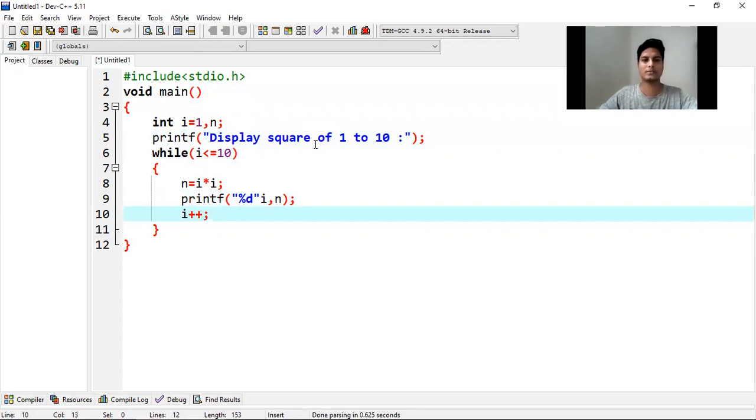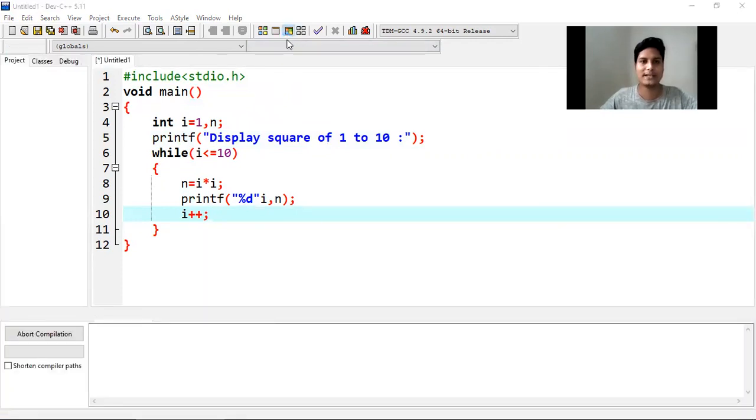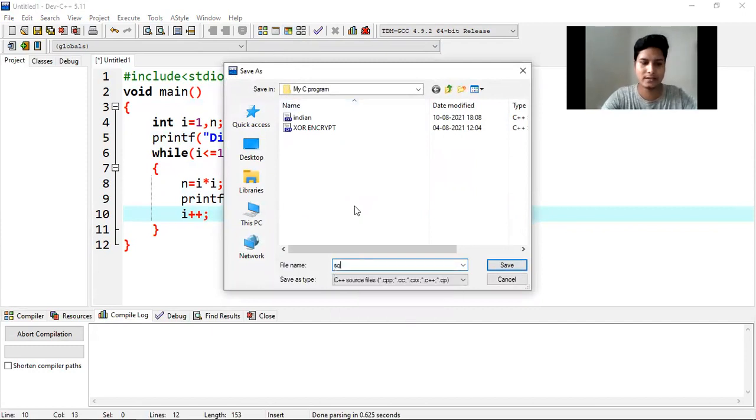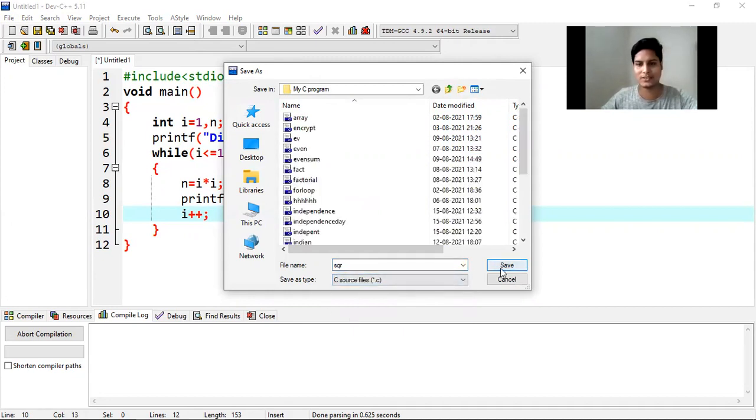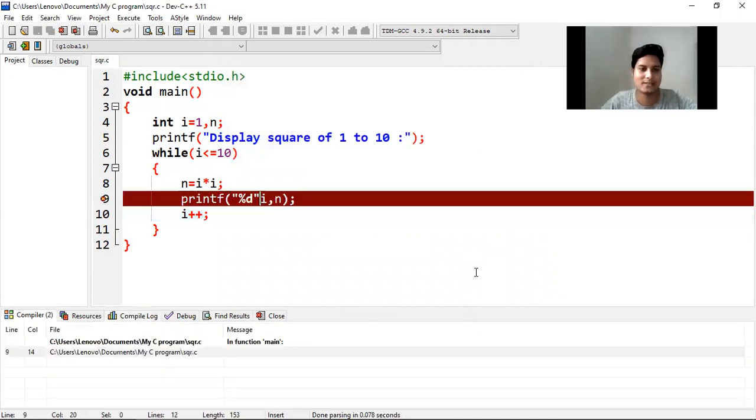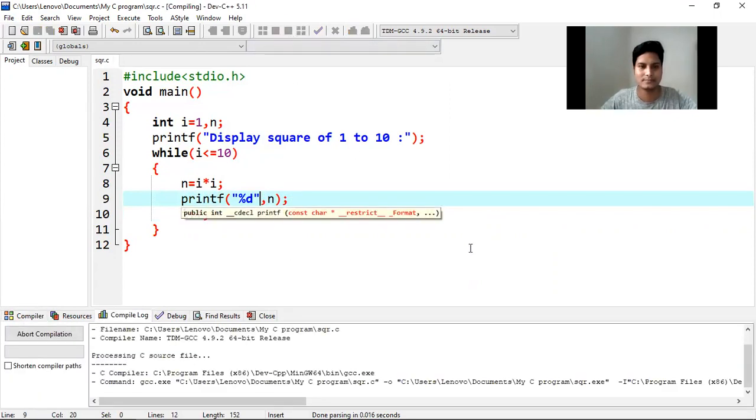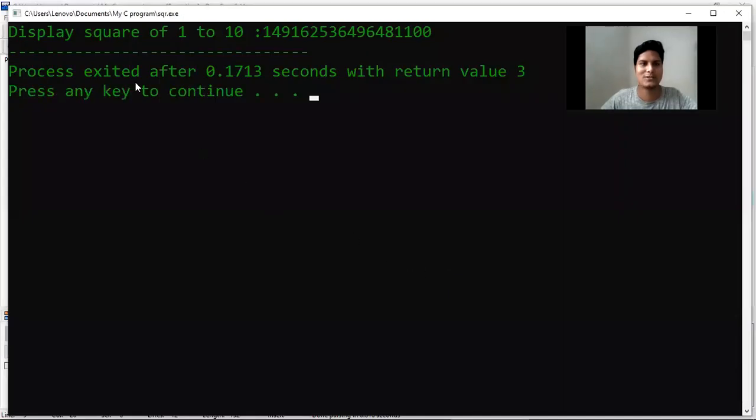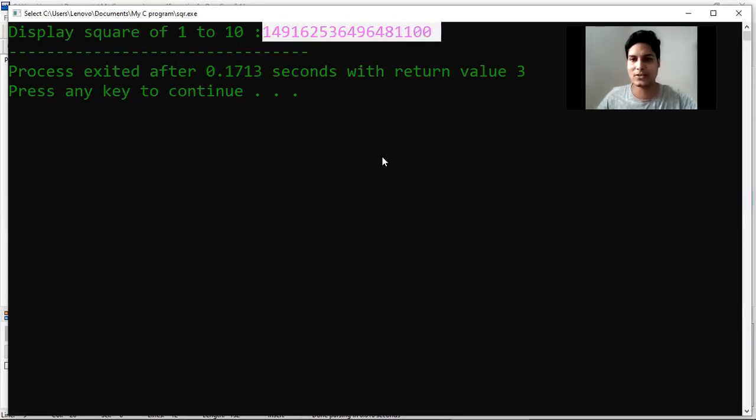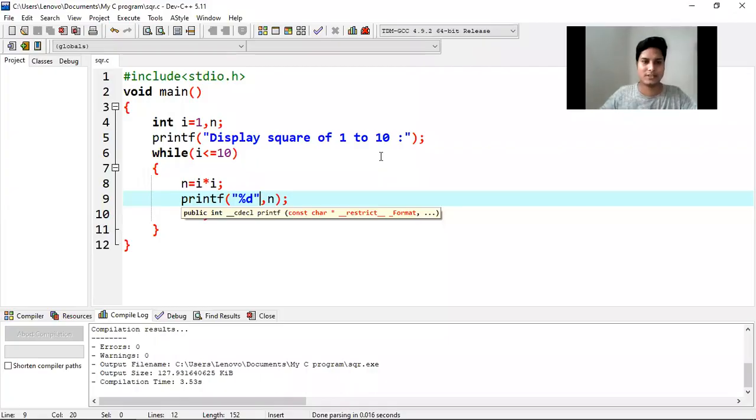i plus plus semicolon, so now my program is complete, let's see what is the output. So when I will compile it, it will ask me to save the program, so I am setting the name square. I am writing sqr.c source files with .c extension. So when I will save it, this will print. So now I am executing it. Yes we can see 1, 4, 9, 16, so this is written consecutively, so let me change something. Here I am using backslash t tab key operator so that it will make a space.